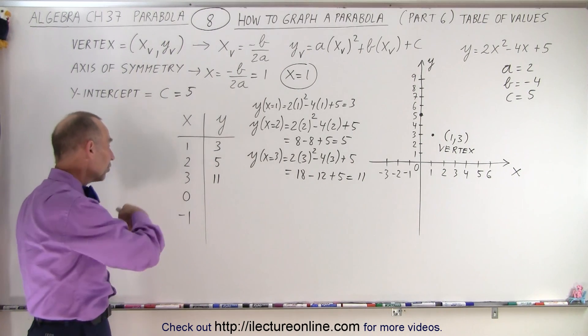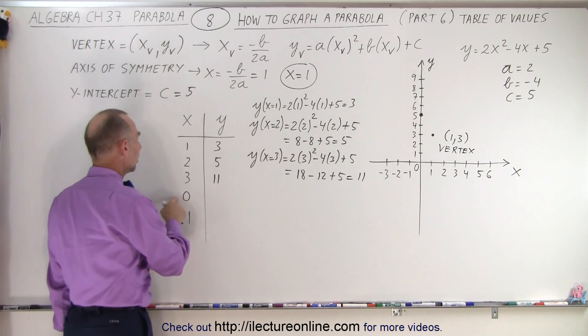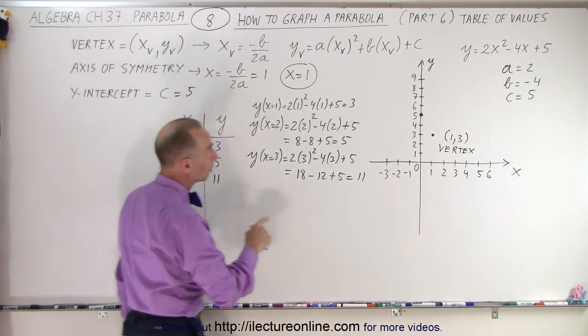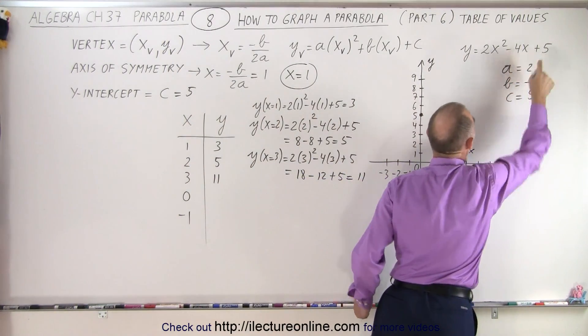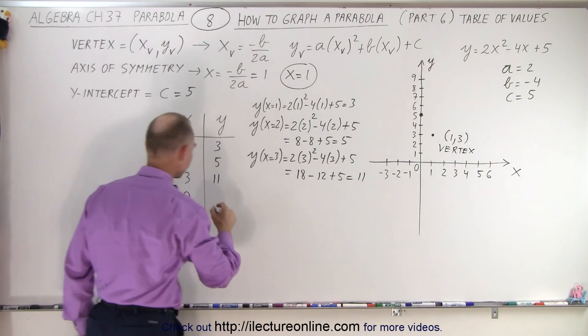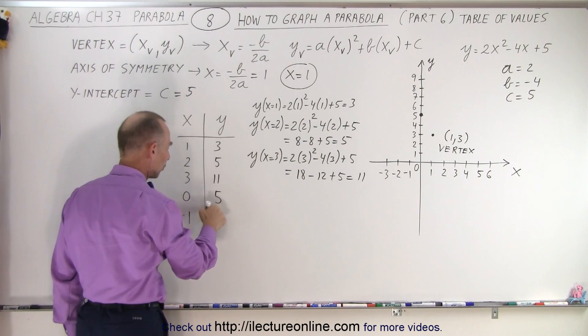And then we go to the other direction. Now we make x smaller. When x equals 0, we simply get the constant c, which is equal to 5. That is where we have the y-intercept.